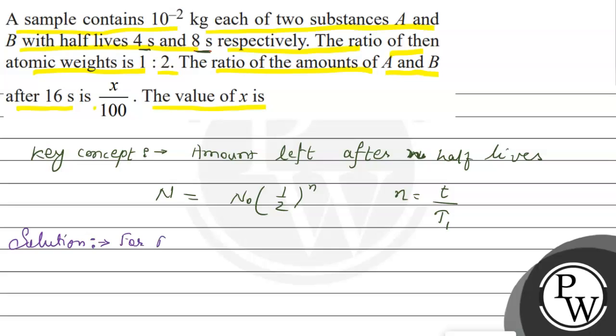For substance A, I will show you how to calculate n. n is calculated as t upon t half, which is the half-life time period. The given time is 16 seconds, so this will be 16 upon 4.